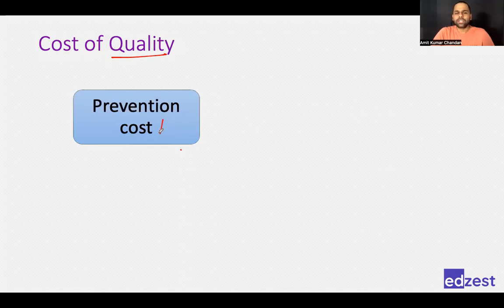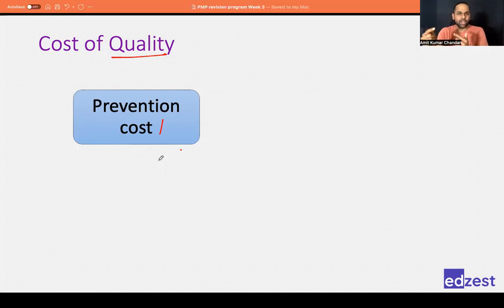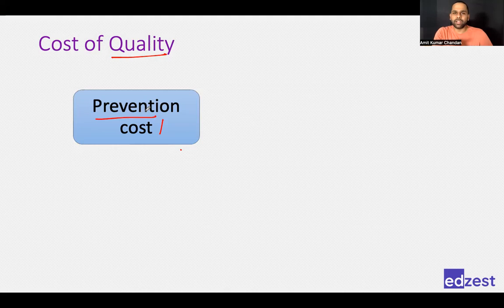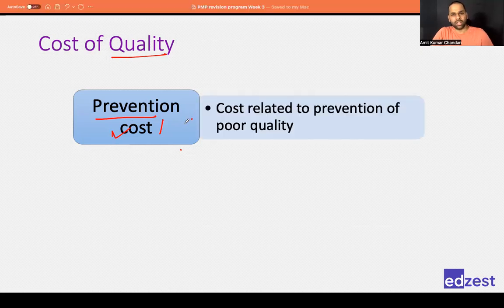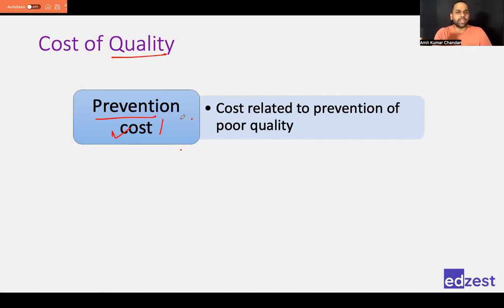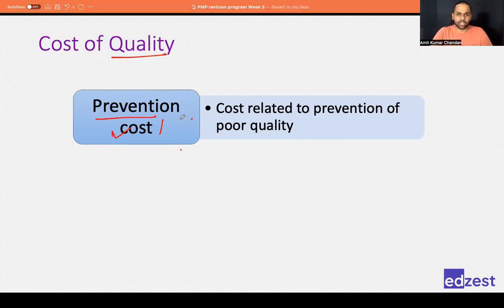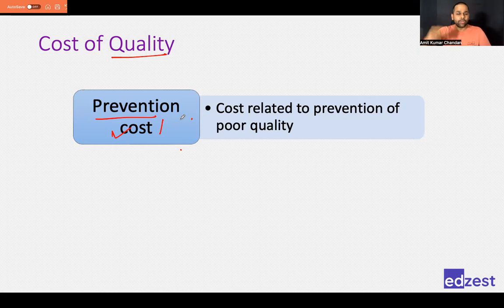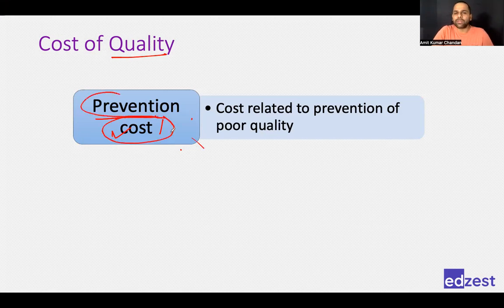Now there are some cost of quality terms we should definitely know for the exam. First is prevention cost — whenever you are trying to take some action so that a problem does not happen, you are trying to prevent it, and that incurs prevention cost. For example, if you think team members will make mistakes, you provide them training; that training cost is your prevention cost. Similarly, improving the packing of material sent from factory to site is also prevention cost.